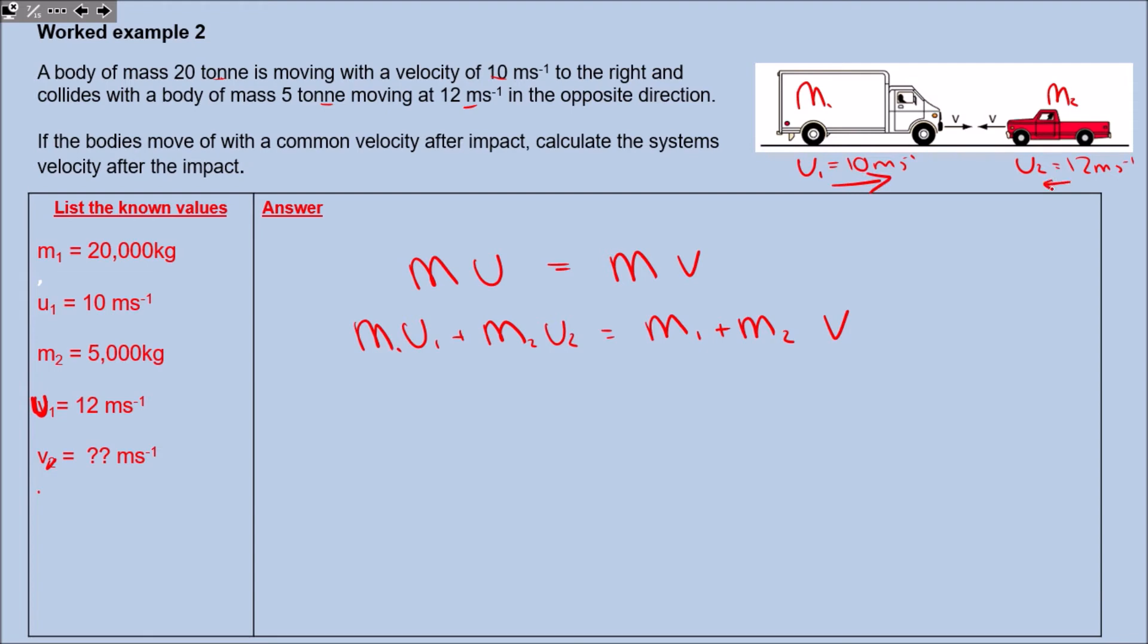We've got 20,000 kilograms (20 times 10³) times the initial velocity of that object, which is 10. I'm going to add that to the mass of the other one, which is 5 times 10³. Now because that vehicle, that second mass, is traveling in that direction, it's actually got a minus in front of that because it's moving in the opposite direction. That's going to equal 20 times 10³ plus 5 times 10³ times the velocity. Let's expand those brackets: 200 times 10³ minus 60 times 10³ equals 25 times 10³ times velocity.